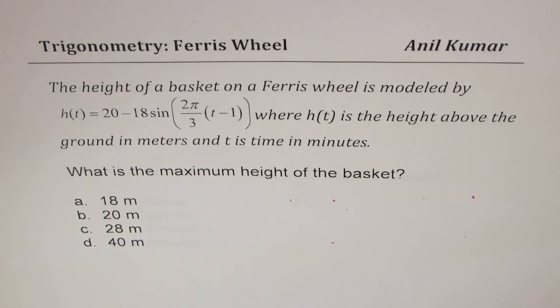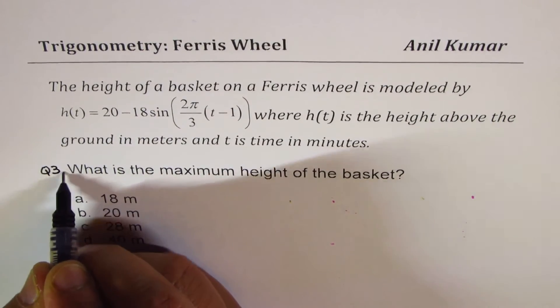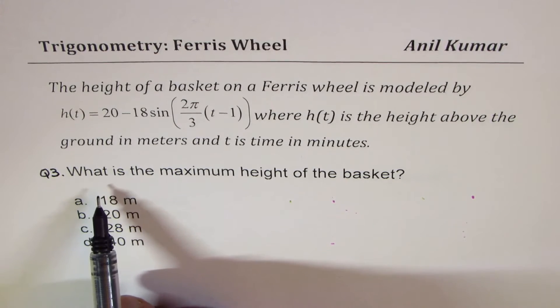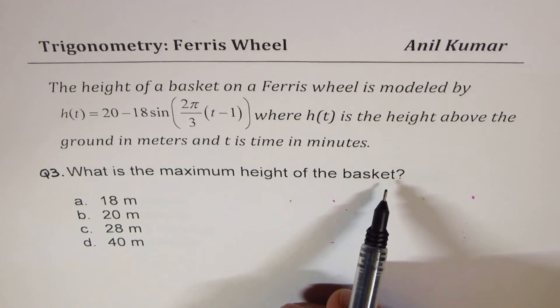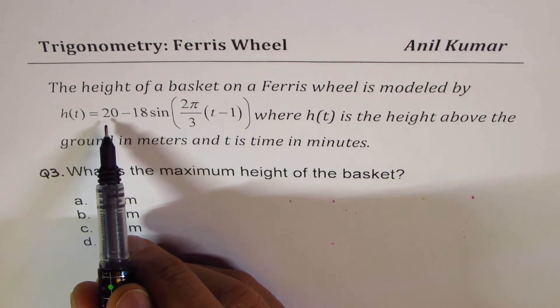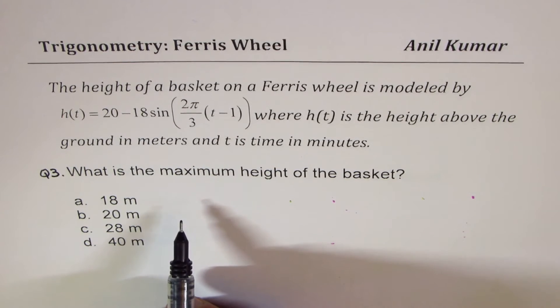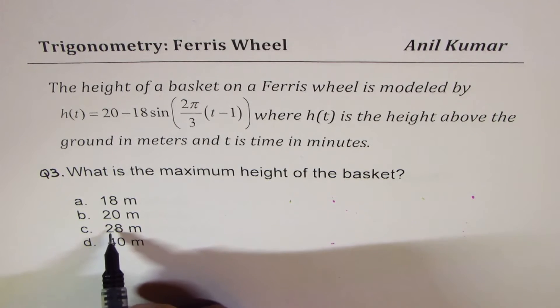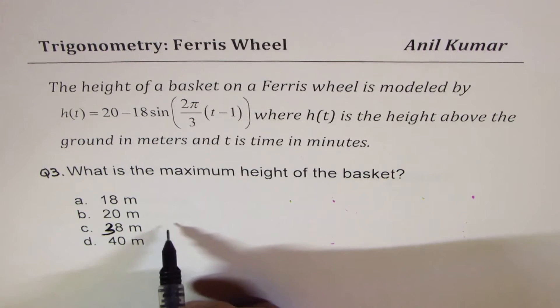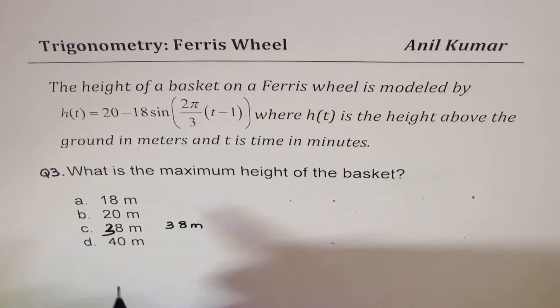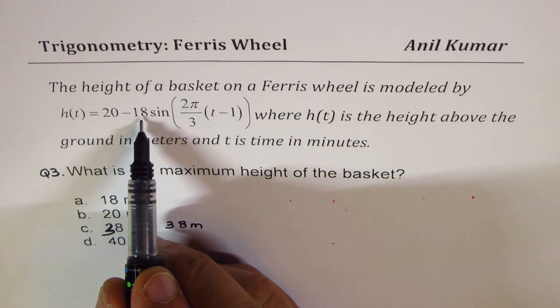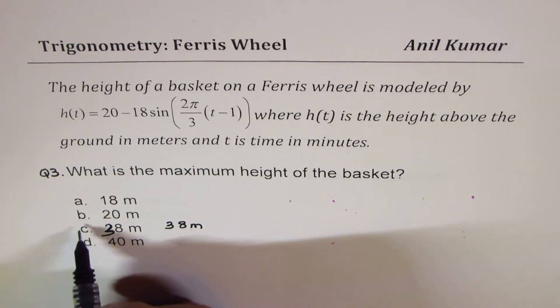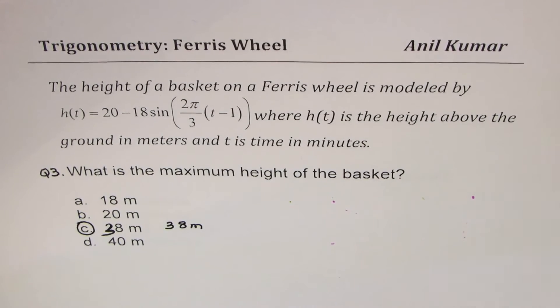Let's move on to the next question, which is question number 3 for us. We are again talking about the same basket, same equation. The question is, what is the maximum height of the basket? So you know maximum height is 20 plus 18, which is 38. That 38 is not an option here. I think there is a typing error. This should have been 38. So I made this as 38 meters. From the axis of 20, it can go 18 above. So that makes it 38. Option C is the right option.